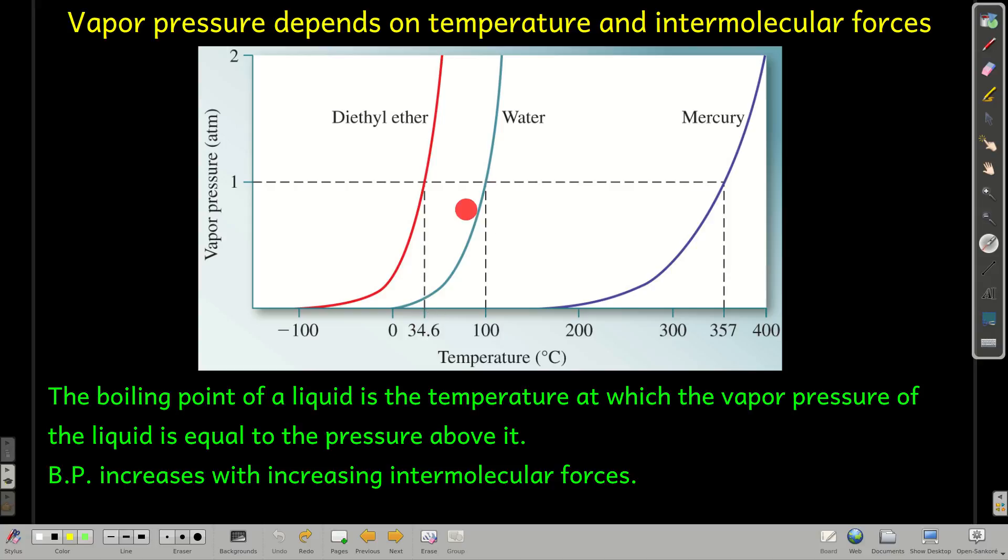Now, we can also look at boiling point. The boiling point of the liquid is the temperature at which the vapor pressure of that liquid is equal to the pressure above it. So, let's say the pressure above the liquid is normal atmospheric pressure, one atmosphere. That'd be this line right here.